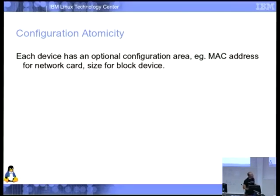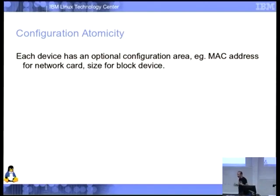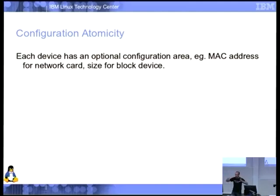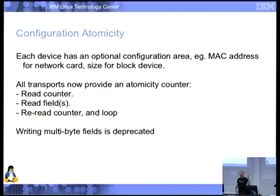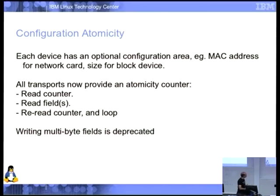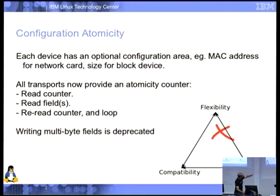Configuration atomicity — we have a configuration area, great for putting things like the MAC address in a network card or the block device size. It's actually writable by the guest too. The problem: if you have geometry information for a block device that can change, how do you read it safely? The answer currently is 'hope it doesn't change or try reading it twice.' Neither is really robust. So every transport now provides an atomicity counter: you read the counter, read the fields, read the counter again — if it changed, something was updated. With correct memory barriers this is safe. And writing multi-byte fields is something we just decided not to do, ever.